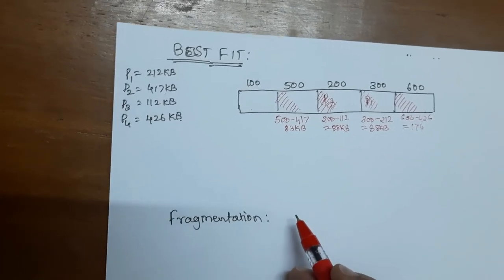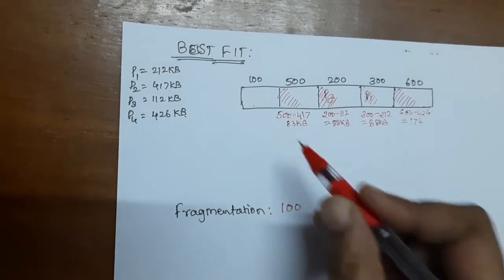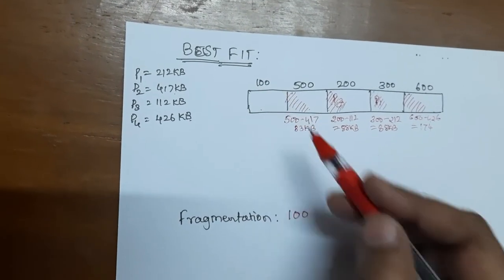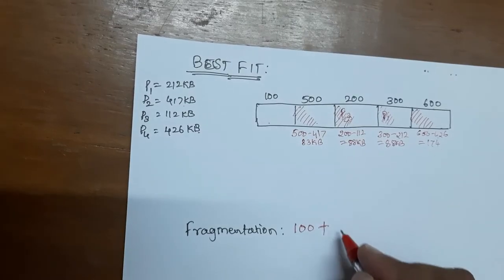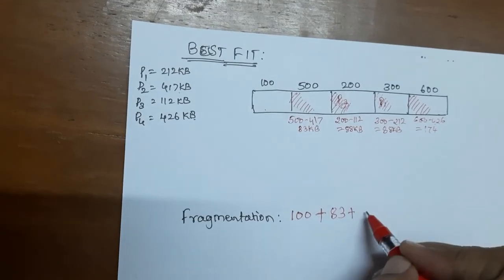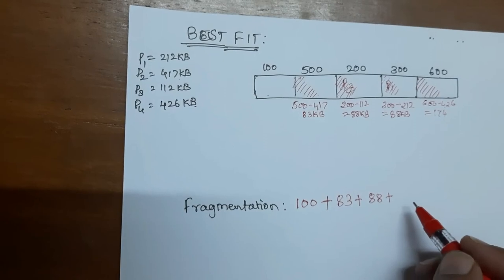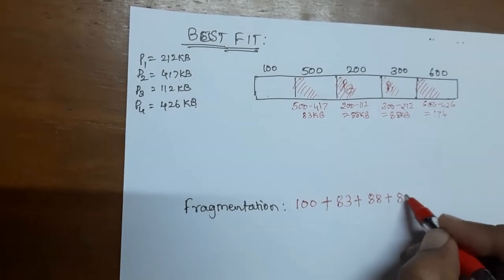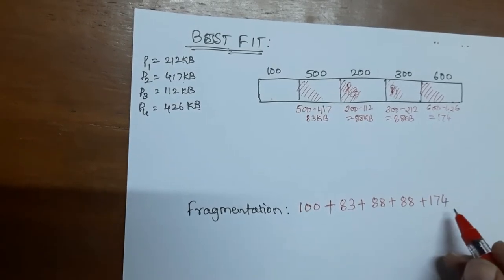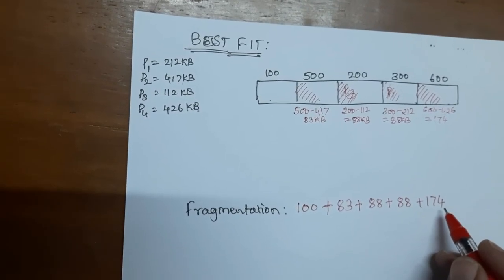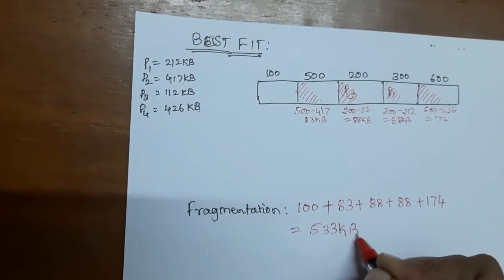Now to calculate the total leftover memory: the first block is completely free at 100 KB, plus a small hole in the second partition of 83 KB, plus 88 KB in the third partition, plus 88 KB in the fourth partition, plus a hole of 174 KB in the fifth partition — giving a total fragmentation of 533 KB.